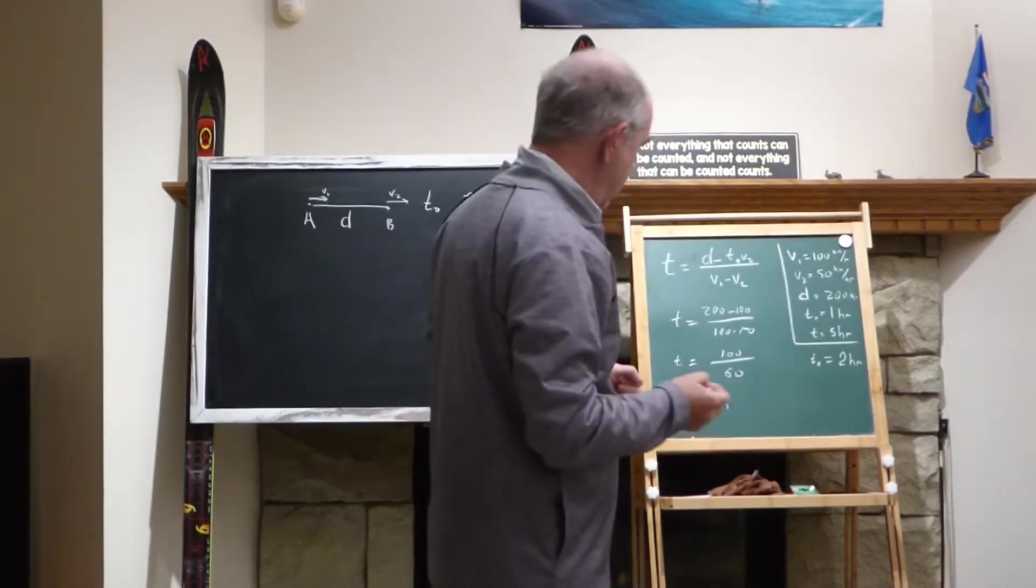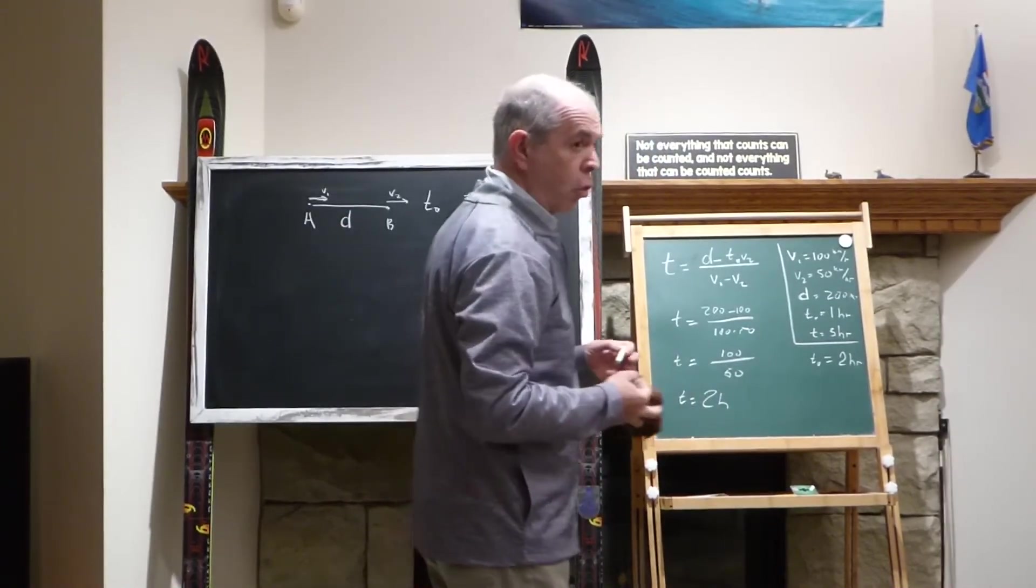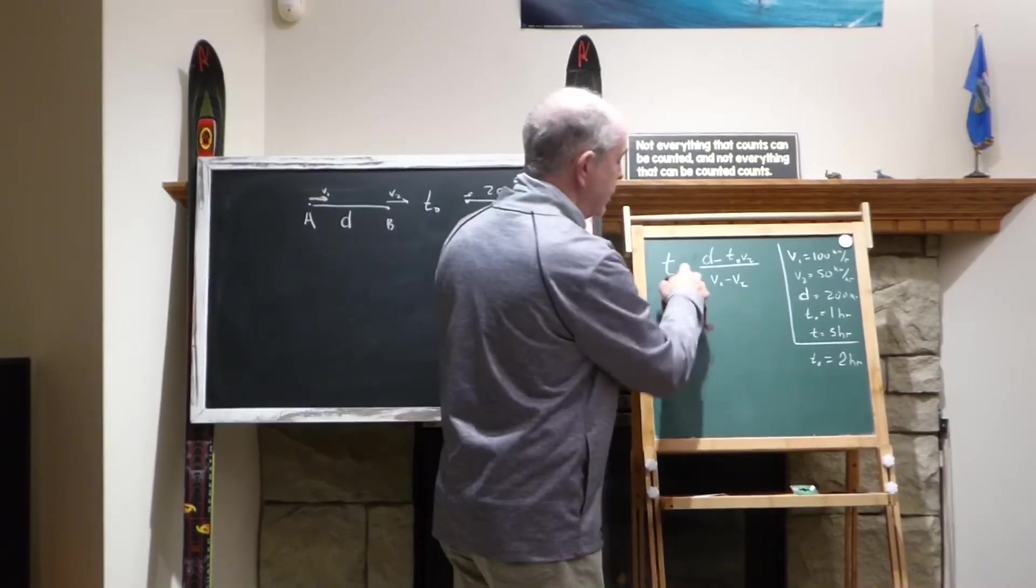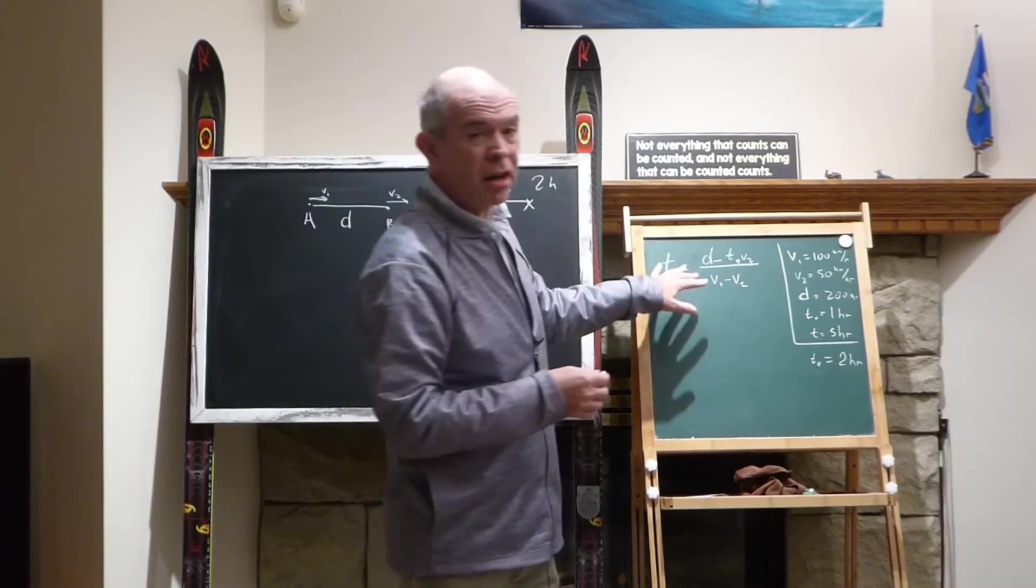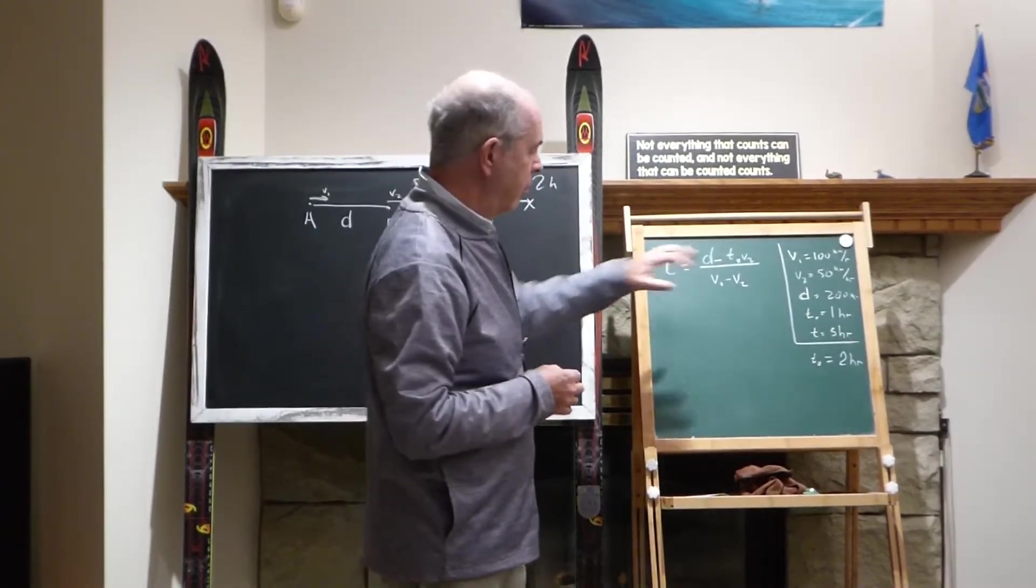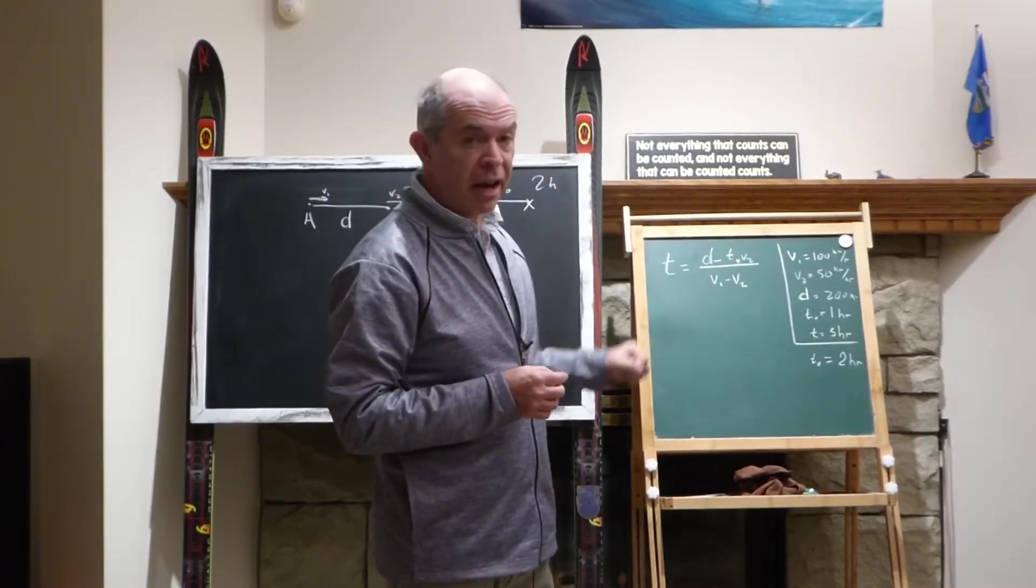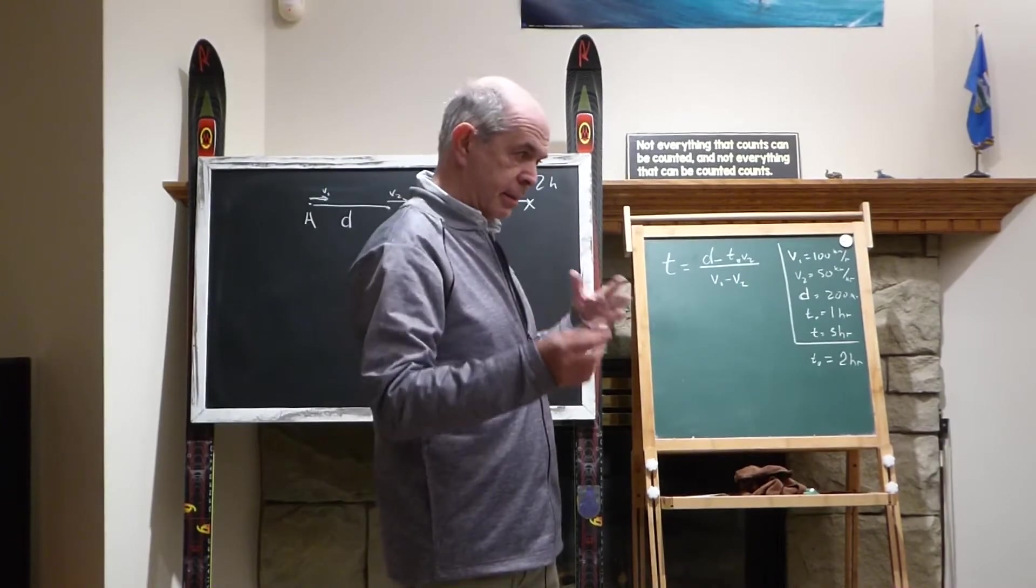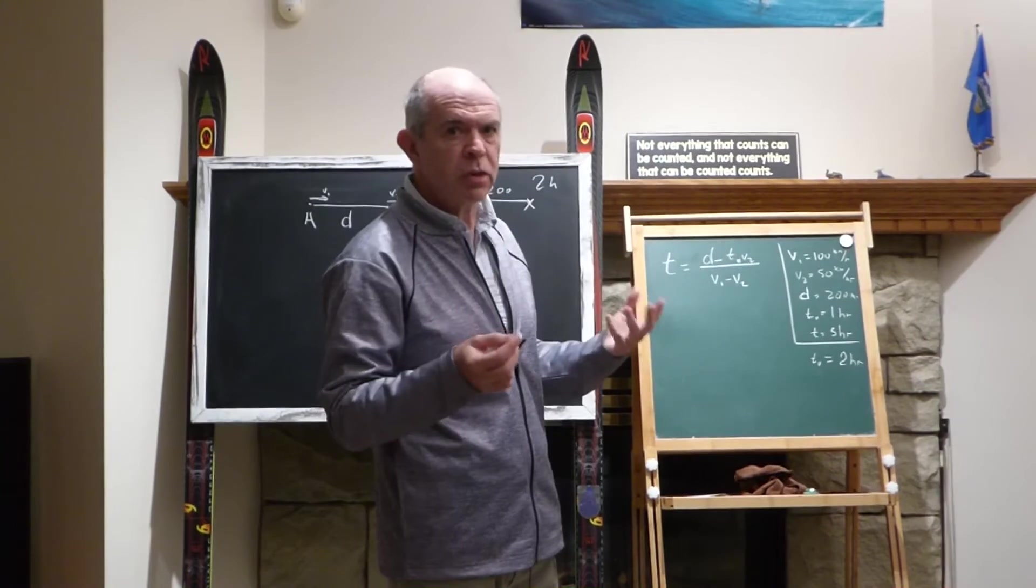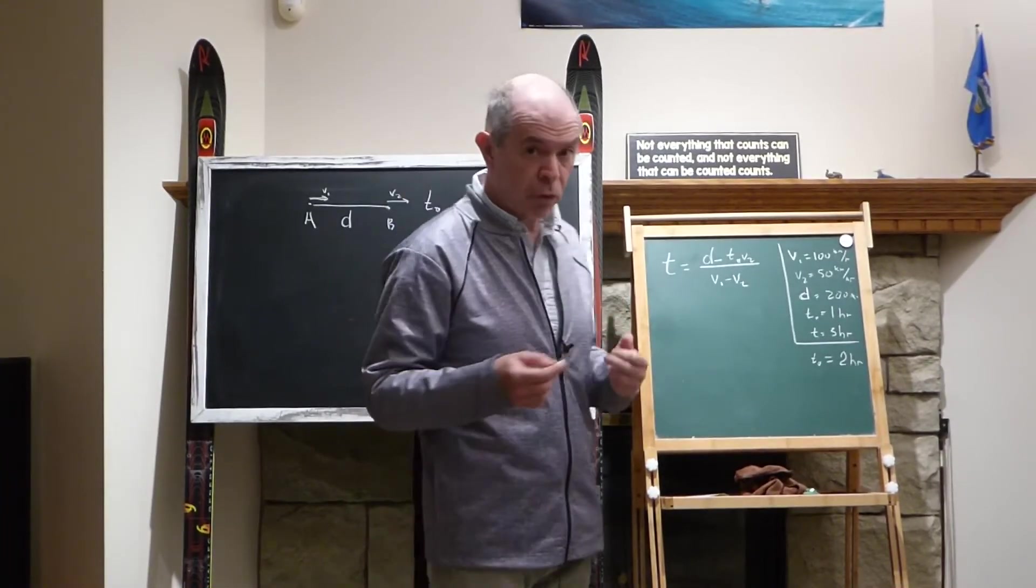Nice. So that immediately shows to us that it's very nice to have the solution in generic form, in characters, with letters, and substitute the numbers in the very end, because this gives us completely different situations. It shows us that different situations can be described with the same formula.